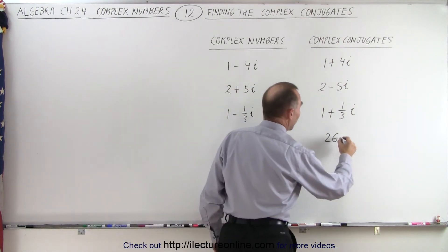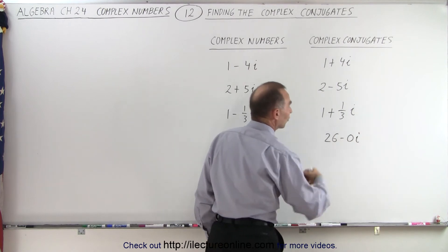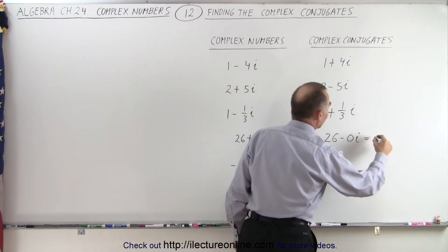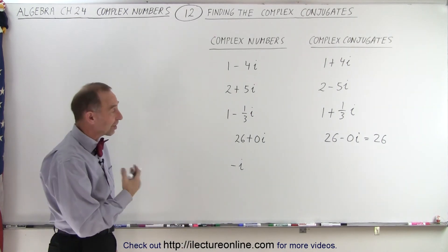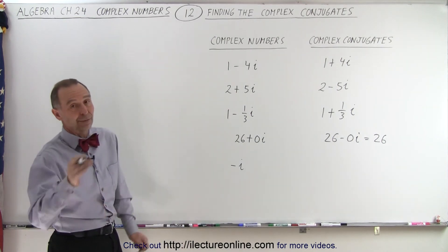Then we can make this 26 minus 0i. And of course, 0 times anything is still 0, so that's simply equal to 26. So you can see that, in essence, we have taken the complex conjugate, except the imaginary part was equal to 0.